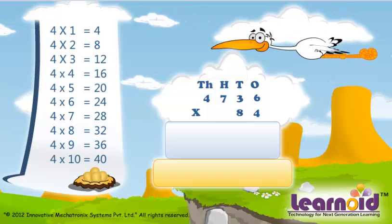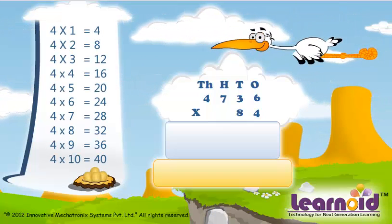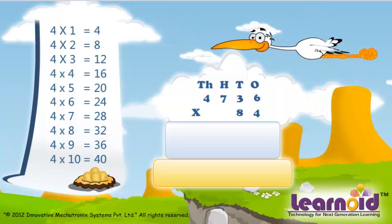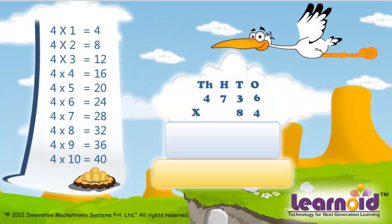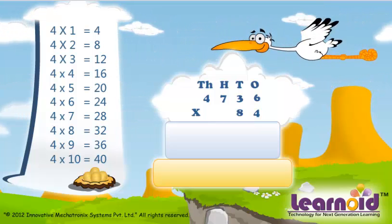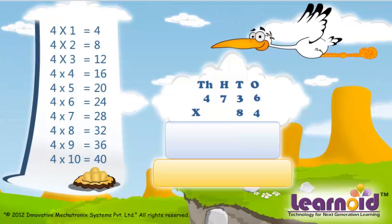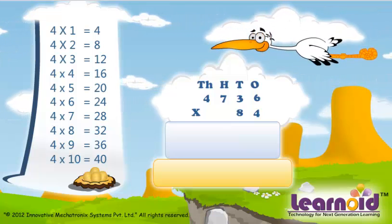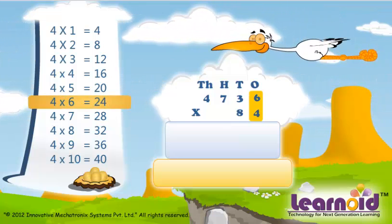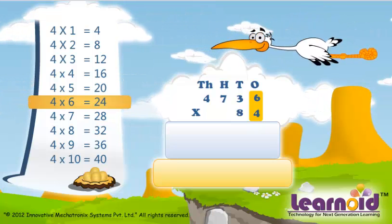The number is 4,736. We have to multiply it with 48. First we will multiply it with 4. 4 x 6 is 24.